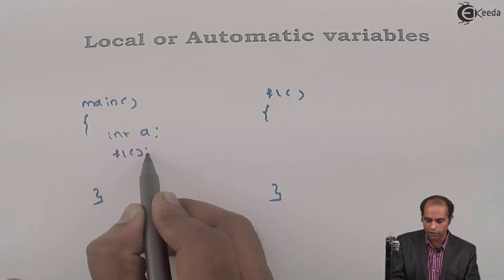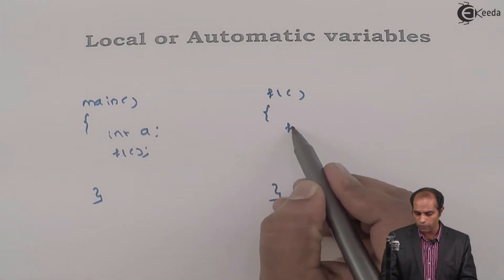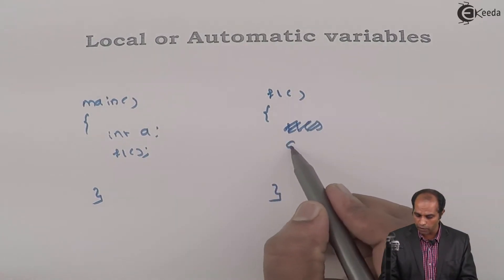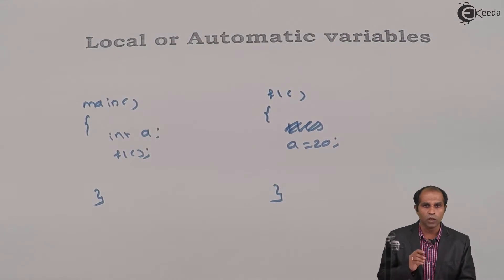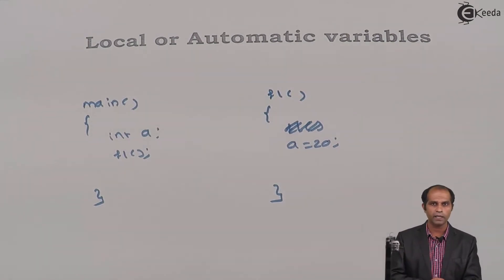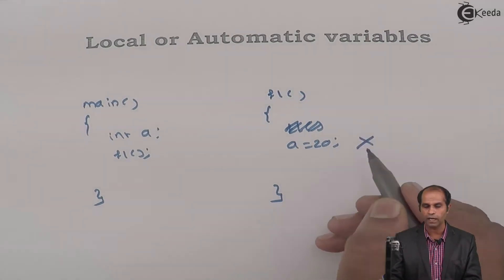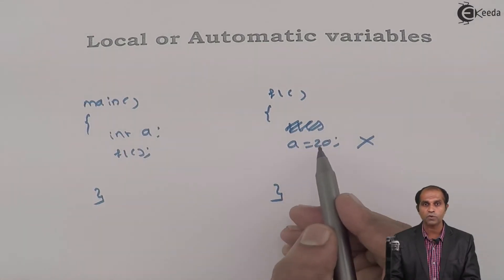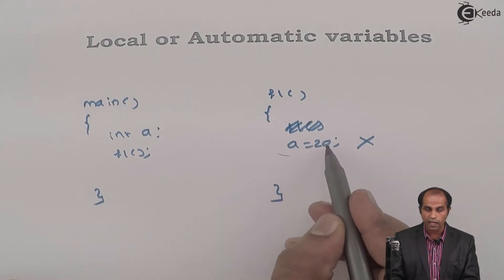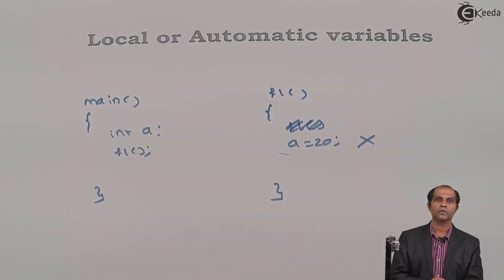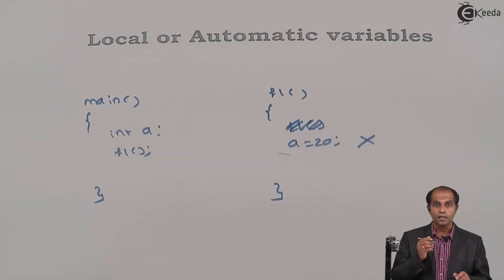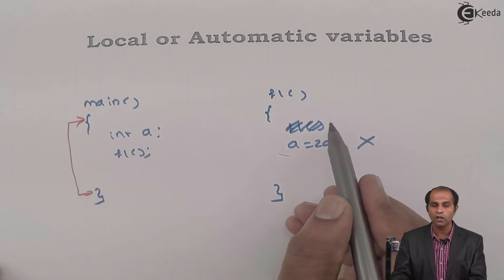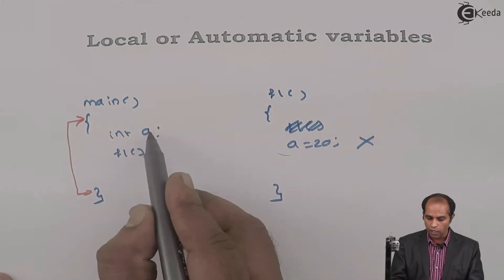Suppose I call function f1, and inside f1 there is an instruction: a = 20. Will this be a valid instruction? No, this is invalid. Even though a has been declared, I can't use a in f1 because this a is unknown to f1. Even though there is a declaration, since the area of declaration is within main, a is treated as an unknown variable for f1.